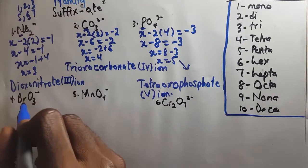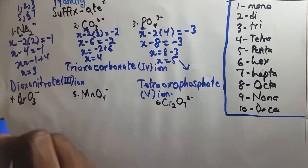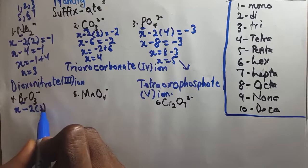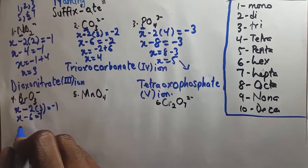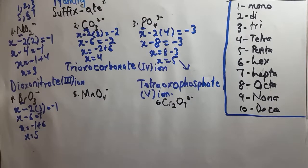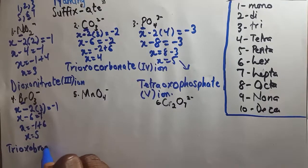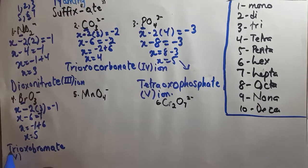The fourth example is BrO3 minus. We find the oxidation number for Br. So: X plus (−2 × 3) equals negative 1. X minus 6 equals minus 1. X equals minus 1 plus 6, so X equals 5. The name is trioxobromate(V) ion — tri for 3 oxygens, oxo for oxygen, bromate with the -ate suffix, and Roman numeral V for 5. It is an ion because there is a charge.